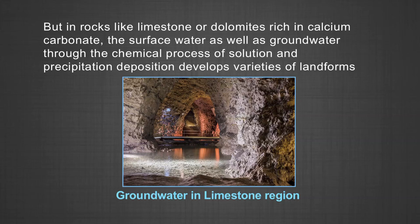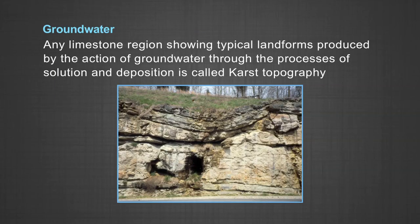Physical or mechanical removal of materials by moving groundwater is insignificant in developing landforms. That is why the result of the work of groundwater cannot be seen in all types of rocks. But in rocks like limestone or dolomite, rich in calcium carbonate, the surface water as well as groundwater through the chemical process of solution and precipitation develops varieties of landforms. These two processes of solution and precipitation are active in limestone or dolomite. Any limestone region showing typical landforms produced by the action of groundwater through the process of solution and deposition is called karst topography.